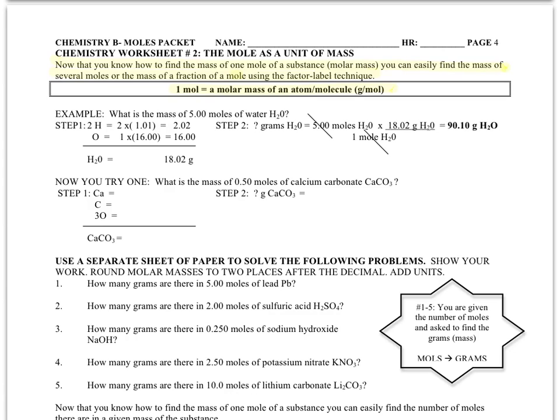But once we know the molar mass of an atom or molecule, then we can easily figure out the mass of several moles or the mass of part of a mole. If you know how much one mole of water weighs, then you can figure out how much five moles of water weighs. Likewise, if you know how much one mole of water weighs, you could figure out how much half a mole of water weighs. Simple multiplication or division.